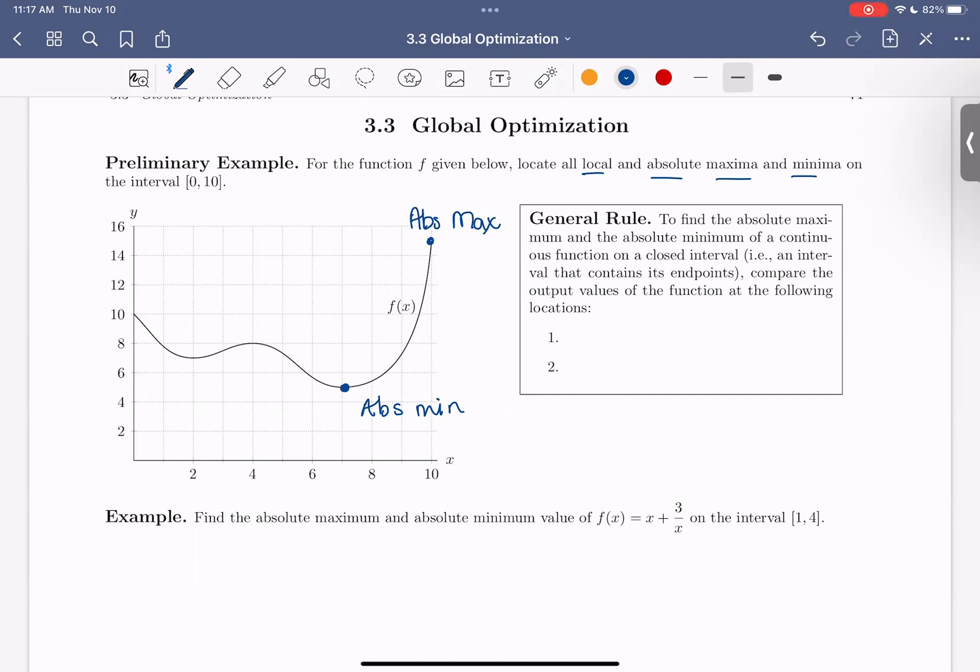Now if we look for local values, we have a local minimum here and a local max here. Let's make a couple more observations. We see that at these values inside the interval, we also have critical points.